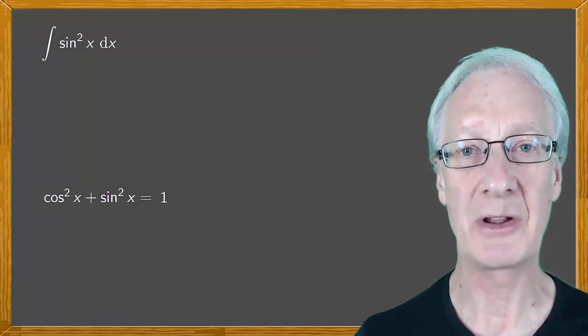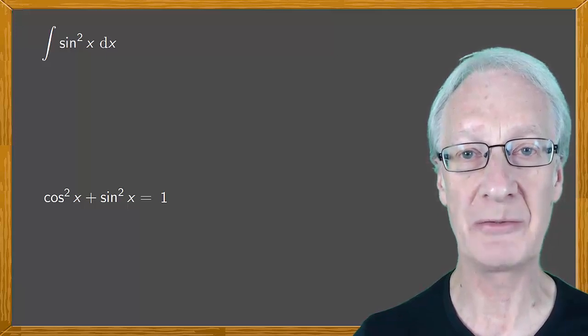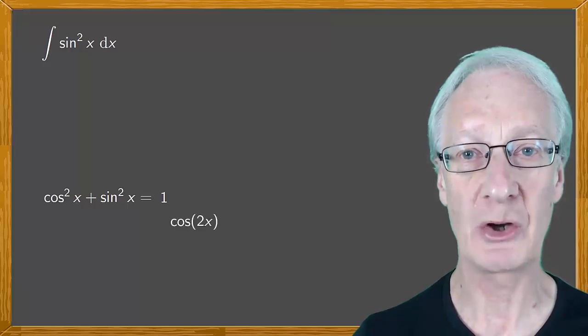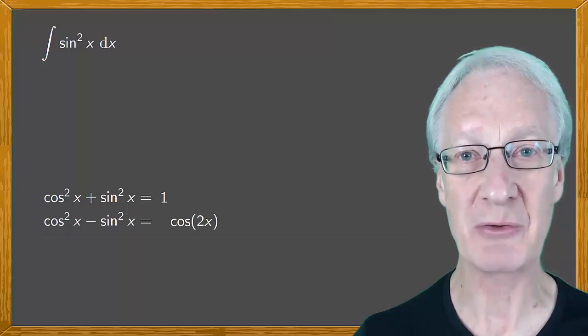Now we'll write down the cosine formula for a double angle. Cos 2x equals cos squared x minus sine squared x.